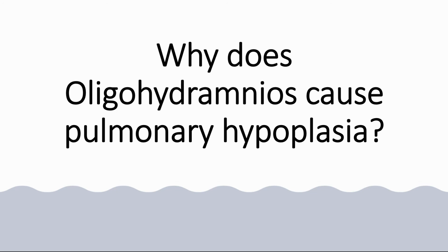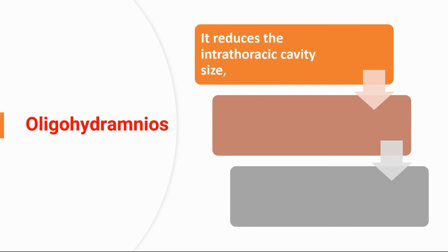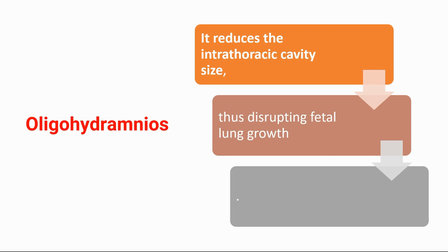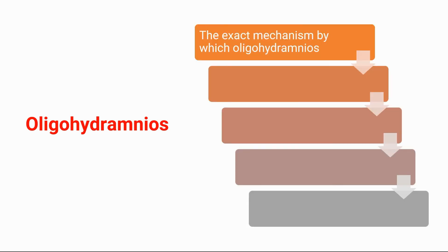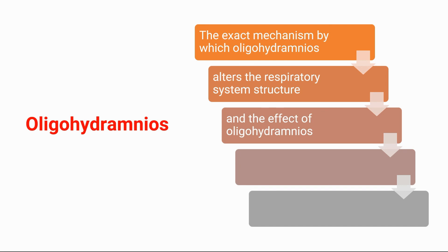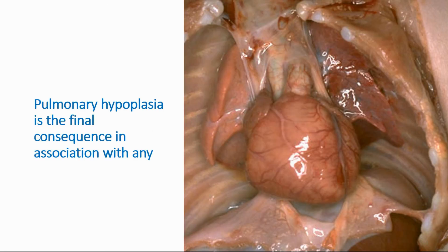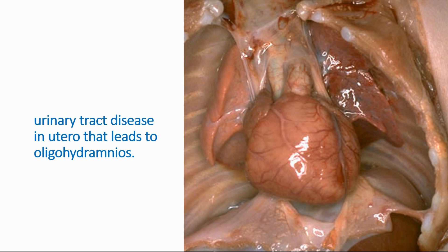Oligohydramnios causes pulmonary hypoplasia by reducing the intrathoracic cavity size, hindering growth in general, and causing a decreased rate of growth, thus disturbing fetal lung growth and leading to pulmonary hypoplasia. The exact mechanism by which oligohydramnios alters the respiratory system structure and its long-term respiratory outcomes remain unclear. Pulmonary hypoplasia is the final consequence in association with any urinary tract disease in utero that leads to oligohydramnios. Thank you.